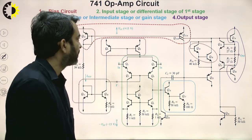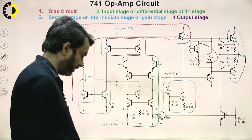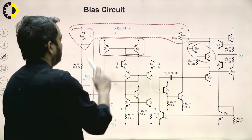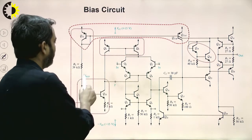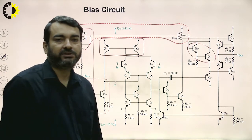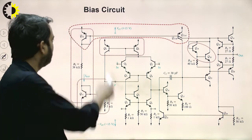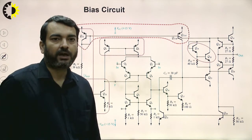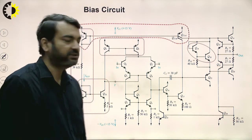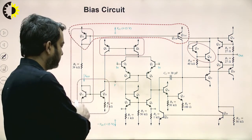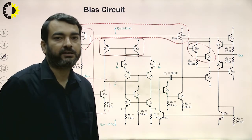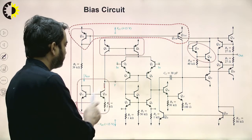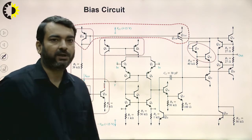Coming to the bias circuit, there are four biasing sections. First, the reference current is generated by transistors Q12 and Q11 using resistor R5, which has a value of 39 kilohms. This reference current is replicated by the Widlar current mirror, which is called the Widlar current source. We get a collector current that is proportional to the reference current.